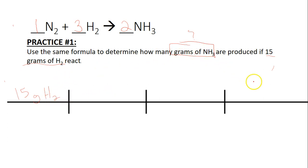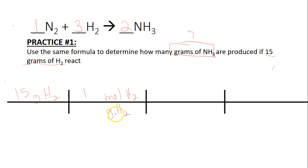Before we can get to grams of NH3, we've got to go back from grams to moles first. We always have to convert back to moles before we can do anything. I'm going to bring grams of H2 to the bottom and go back to moles of H2. The number 1 always goes by mole, and then the number of grams per 1 mole of H2 comes from the periodic table — H is 1 and we've got 2 of them, so we write 2.0 grams. Grams cancels out, leaving moles of H2.